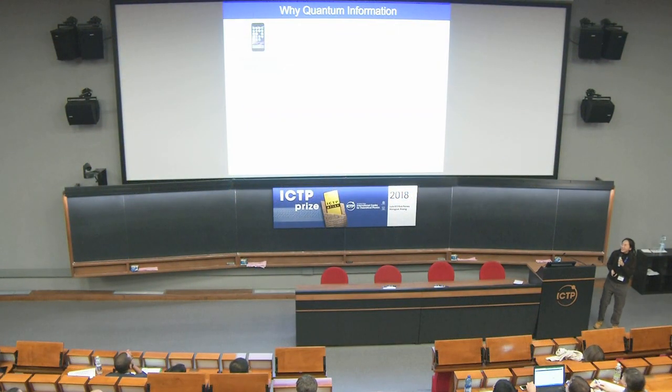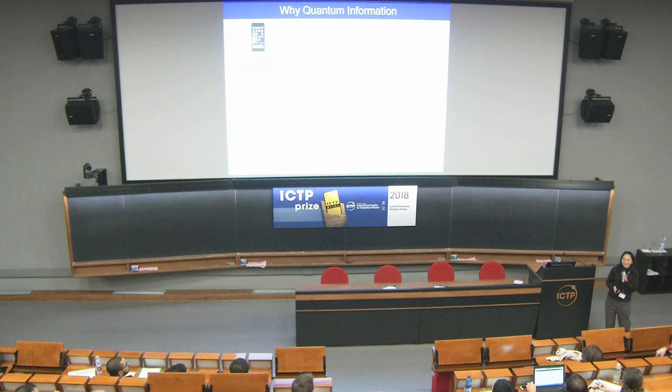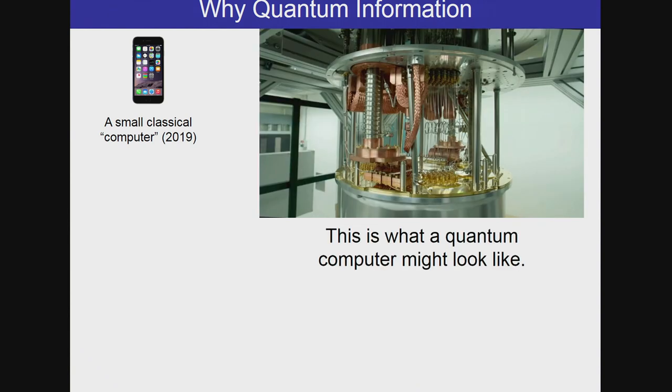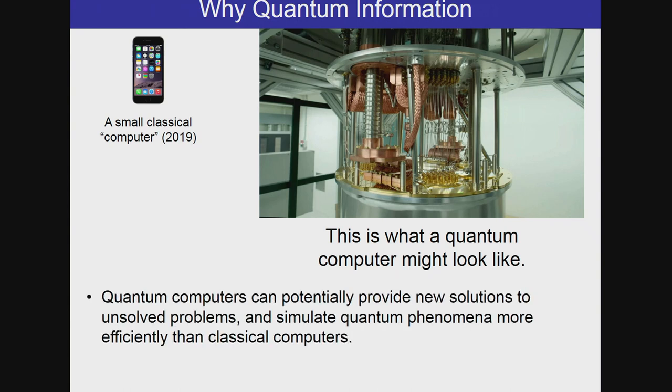First, why quantum information? This is a small classical computer. In 2019, Professor Mazzari had said that you can run Quantum Espresso for silicon on the phone. This is a very small computer now. And this is what a quantum computer might look like. So why bother to move from our small classical computers to this quantum computer that looks very cumbersome and inconvenient?